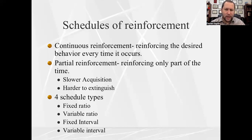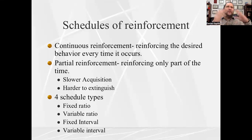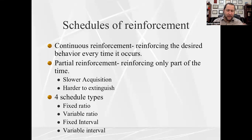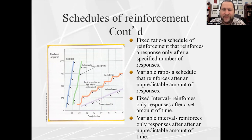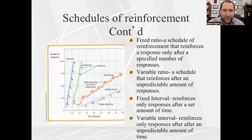Because this is operant conditioning, a behavior must occur in order to get the consequence. So if the required time passes under an interval schedule but you never perform the behavior, you never get reinforcement. Fixed ratio schedules are the easiest to learn because they're very predictable — you only need to attend to the behavior, which has to occur a set number of times, and it's unchanging.